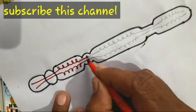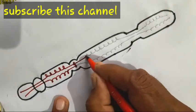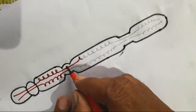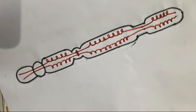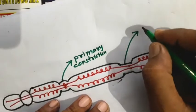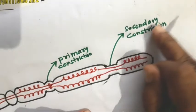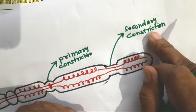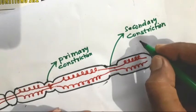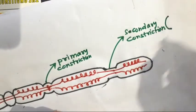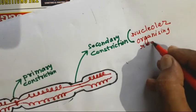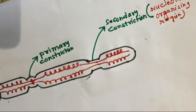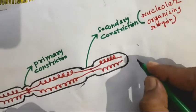Here the two chromatids are actually attached here — this is called the point of centromere. This is called the primary constriction, and this is called the secondary constriction. The secondary constriction is the site of nucleolar formation, so this region is also called the nuclear organizing region. This question also comes at the board level. The last part is called the telomere.